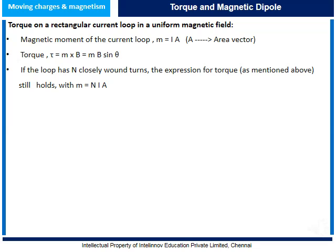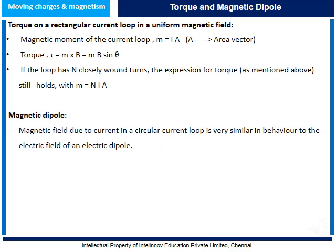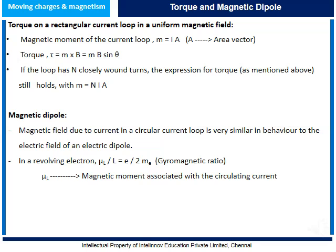Let us understand the magnetic dipole. The magnetic field due to current in a circular loop is very similar in behavior to the electric field of an electric dipole. For a revolving electron, μ_L / L = e / (2m_e), which is also called the gyromagnetic ratio, where μ_L is the magnetic moment associated with the circulating current and L is the angular momentum. The minimum value of μ_L is 9.27 × 10⁻²⁴ ampere·meter², which is one Bohr magneton.